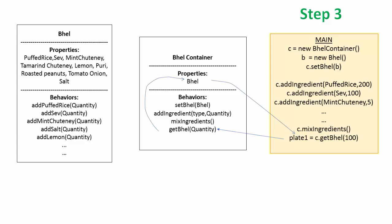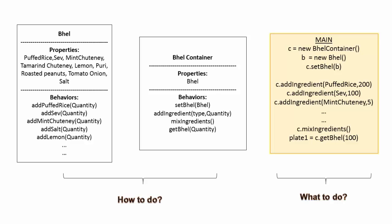For example, if we change the container to a special container with sophisticated machine parts to mix the bhel. Even then, the procedure will talk about what to do, which will be nothing but a method called to mix ingredients. But how to do is taken care by object itself. Finally, container also allows to get a required quantity of bhel. The recipe is same. However, the design approach is more flexible this time.